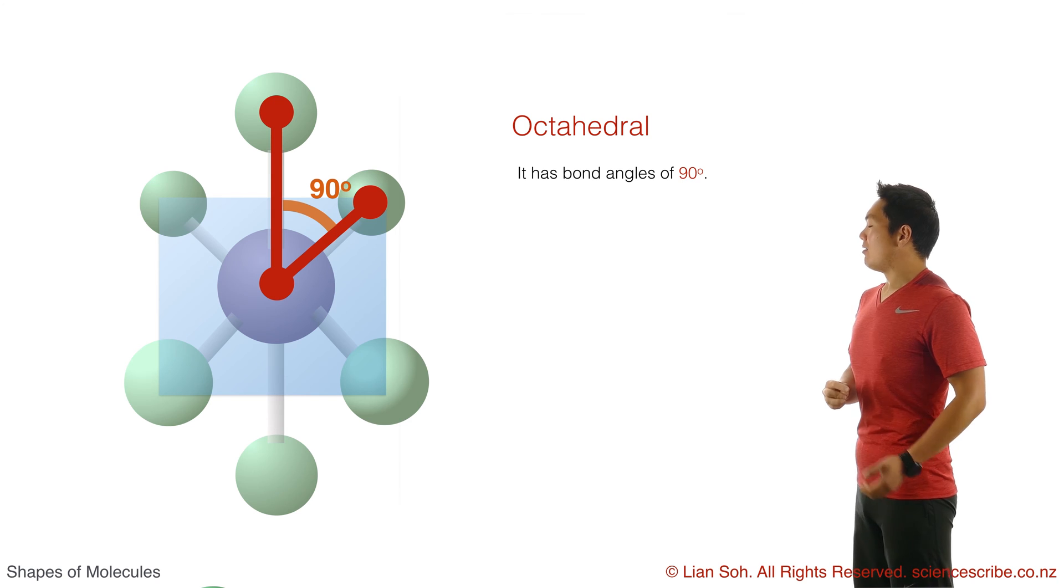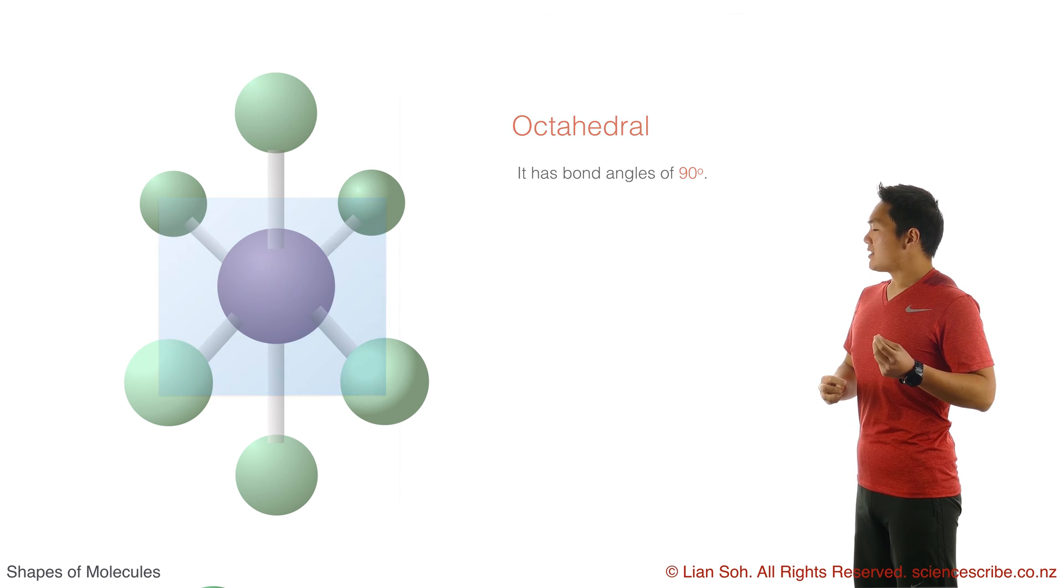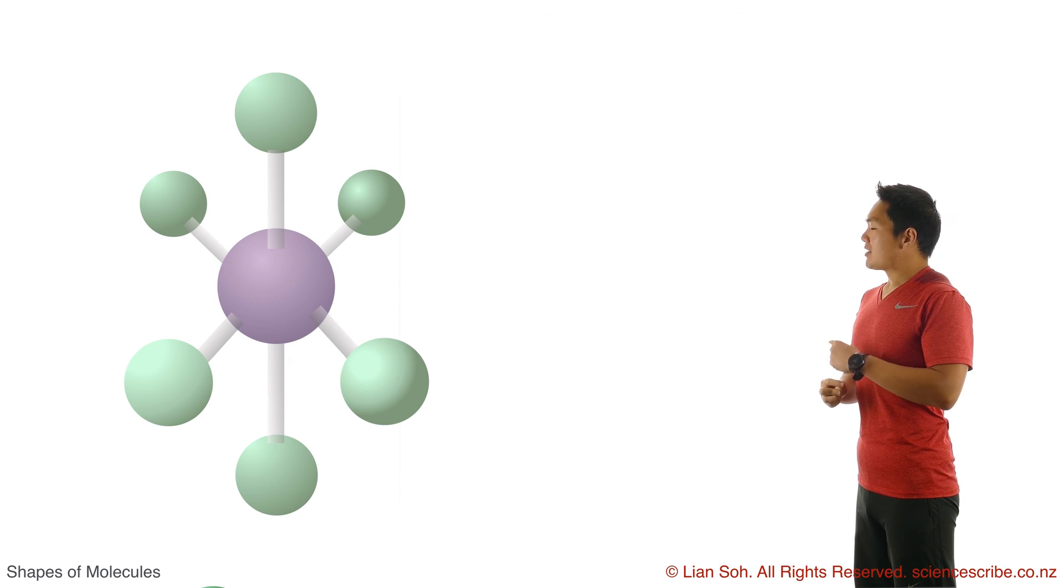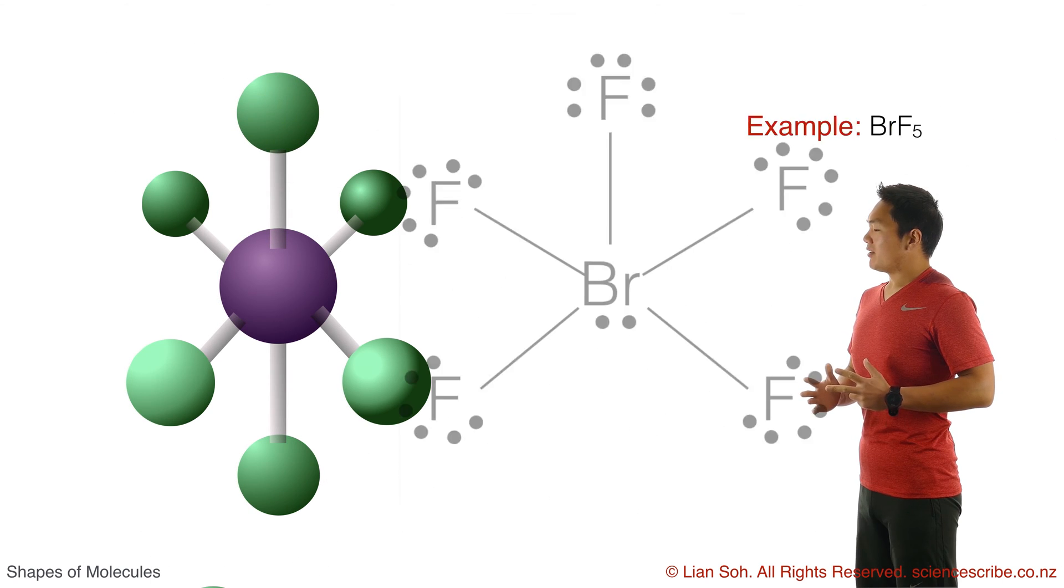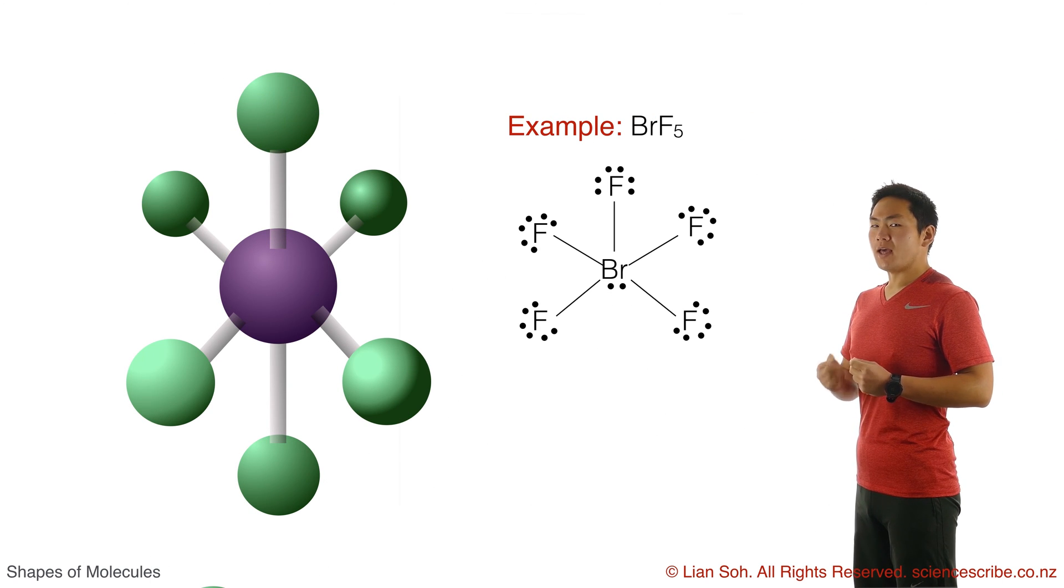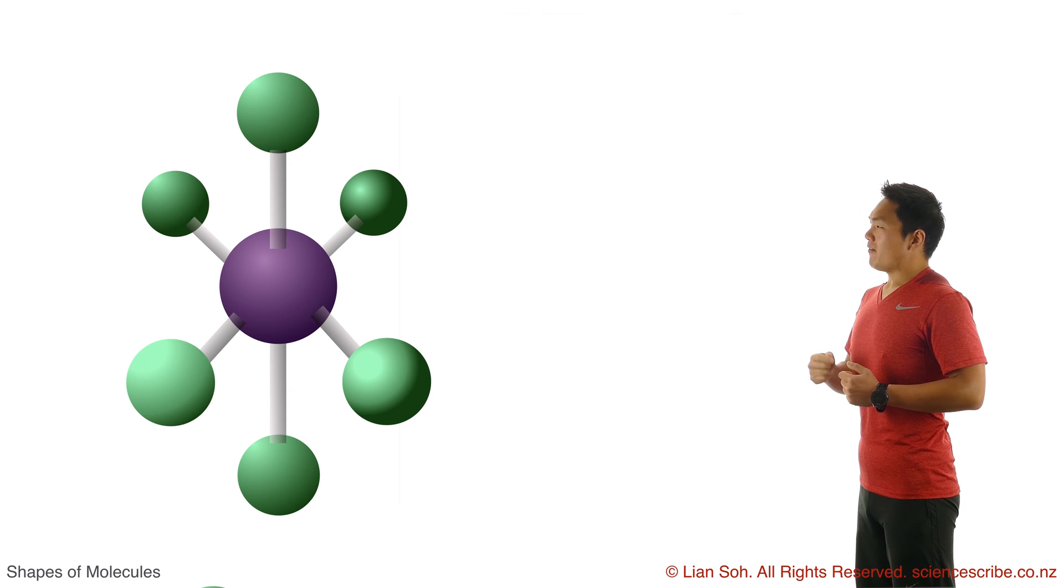So this means that when you go across to the next one with six regions of electron density and one lone pair, this time you're putting lone pairs on the vertical part. And if I pop them at the bottom,